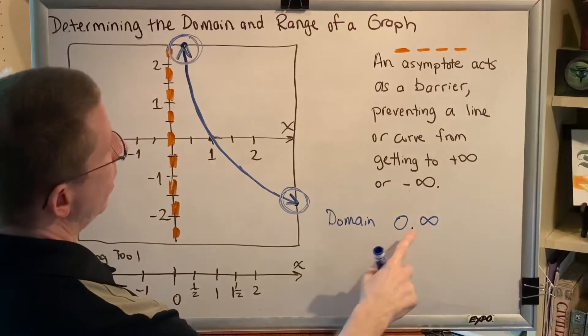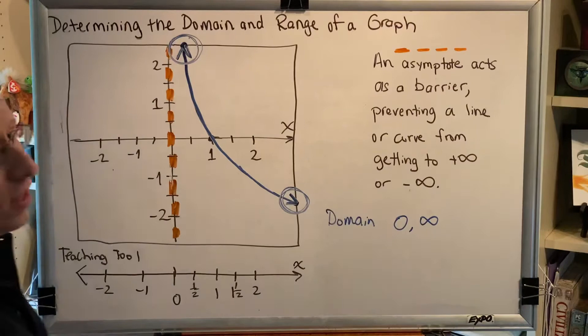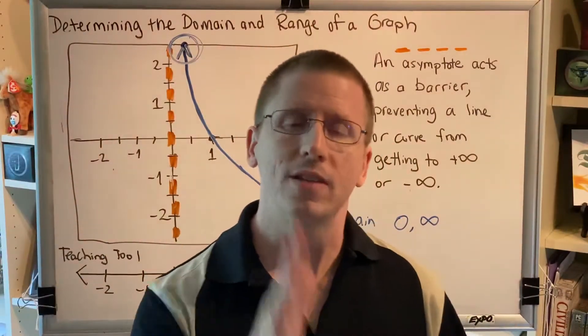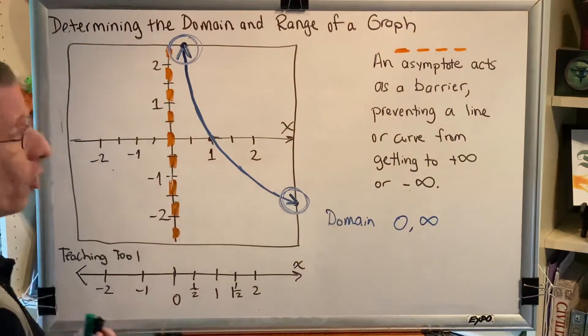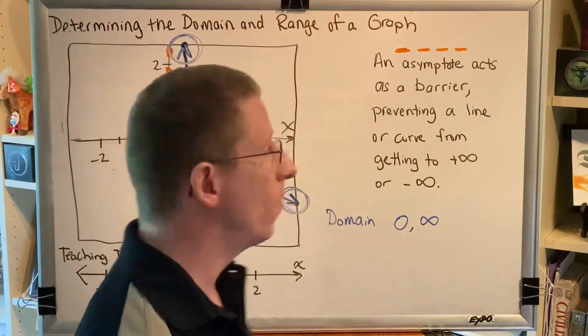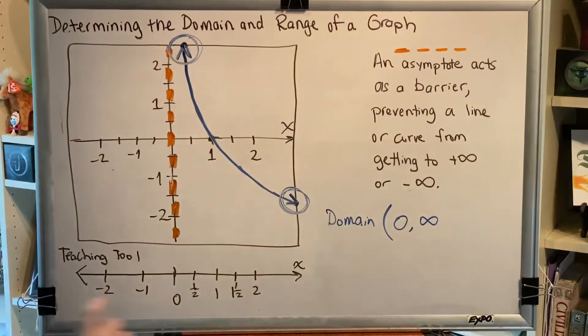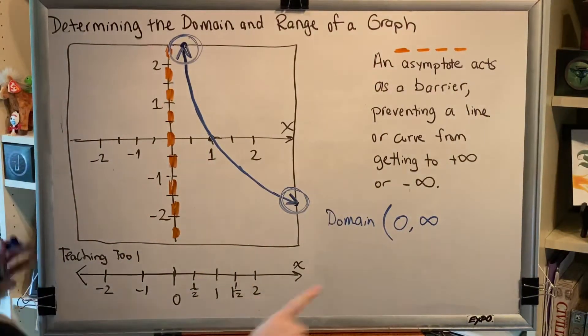Now what about the symbols that go next to us? Do we include zero? Well the answer is no. An asymptote is a barrier that you never reach. This asymptote is at zero, which means we never reach zero. We get as close to zero as we can without actually reaching it, so we use a parenthesis to exclude zero.